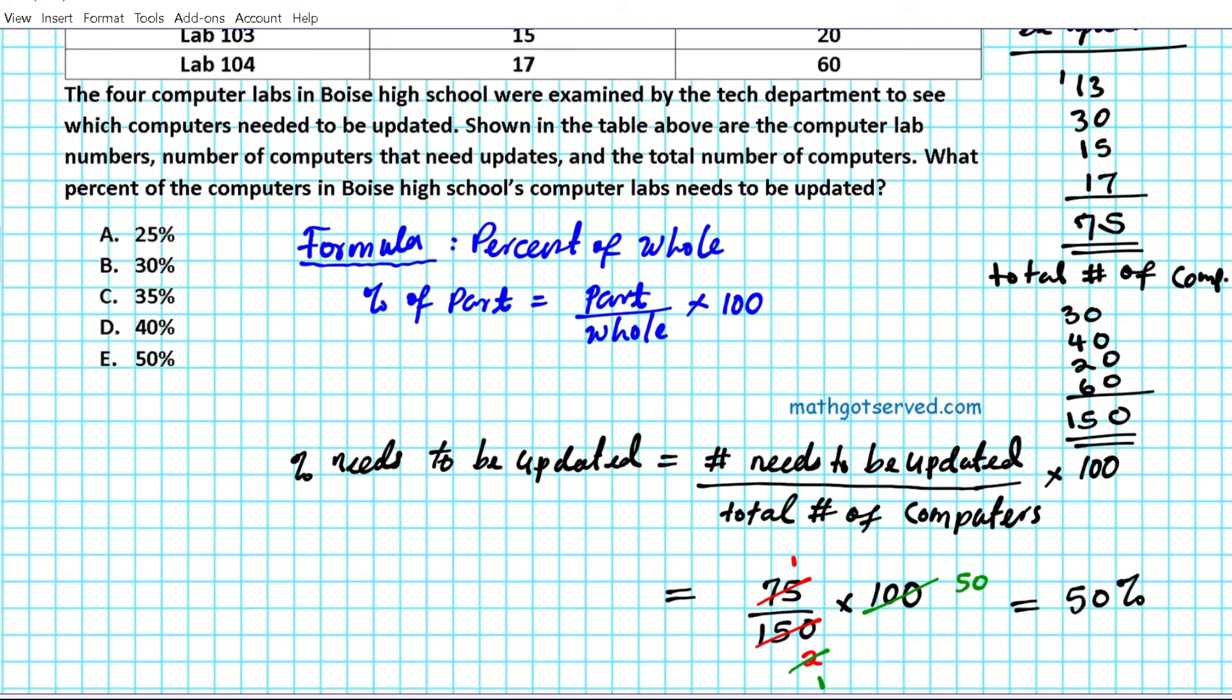So 50% of the total number of computers in Boise High School needs to be updated. All right, so the answer to question number two is option letter E.